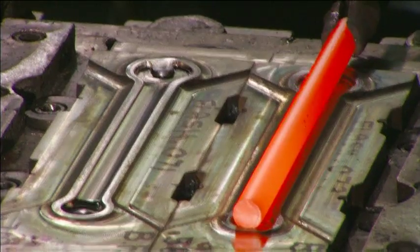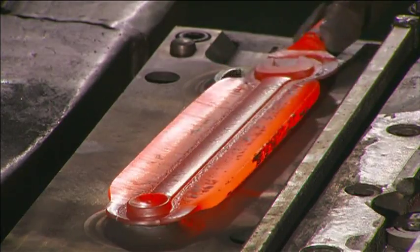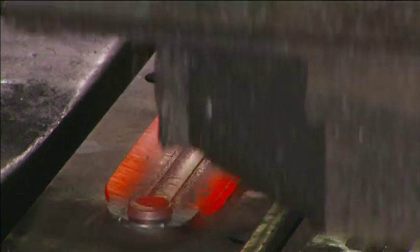The first die creates the wrench's general shape. The second die gives it its finished shape, and the third trims off the excess metal.